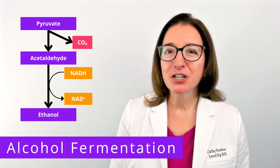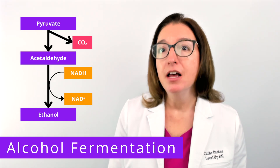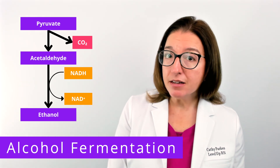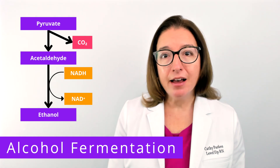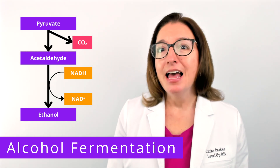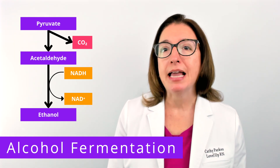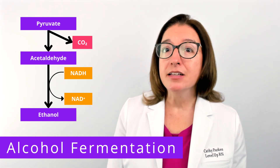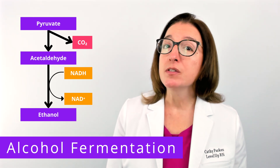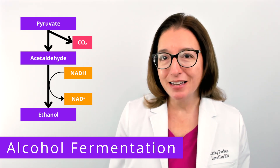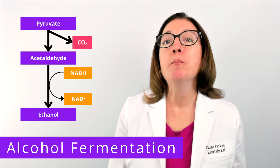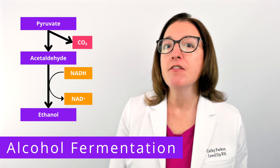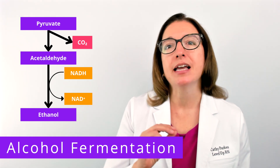The next type of fermentation is alcohol fermentation. During alcohol fermentation, pyruvate that was produced in glycolysis is converted into acetaldehyde and carbon dioxide. Acetaldehyde is then reduced by NADH to make ethanol. NADH is oxidized to NAD+, which can then be used in glycolysis to generate more ATP. One of the main purposes of fermentation is to allow for the regeneration of NAD+, so we can keep producing ATP.